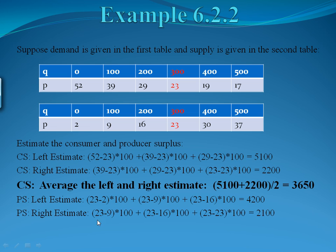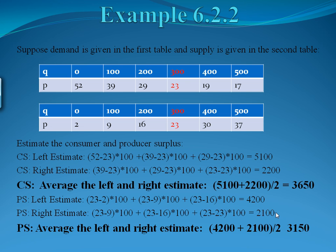We also want to do a right-hand estimate for producer surplus, picking the price on the right each time. For the first 100 units, the price on the right is 9, so we do 23 minus 9 times 100. From 100 to 200, the price on the right is 16, so we do 23 minus 16 times 100. From 200 to 300, the price on the right is 23, so we do 23 minus 23 times 100. When we add those all up, we get 2,100. We average the left and right-hand sums: 4,200 plus 2,100 divided by 2, giving us a producer surplus of 3,150. That is how we estimate consumer and producer surpluses from tables.